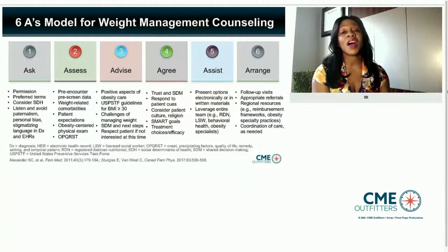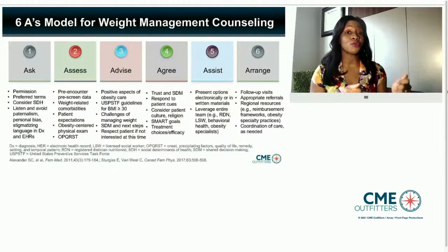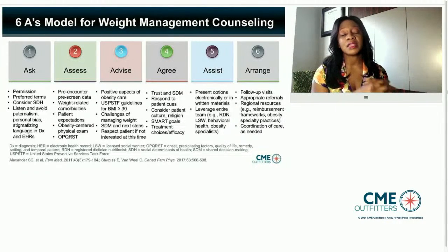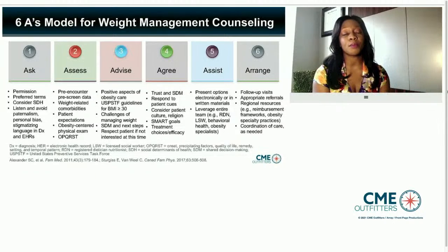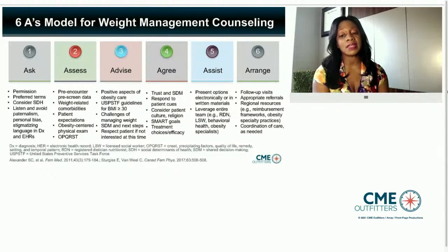Number five is to assist the patient — look at options both written and electronic that we can give patients to help them. We want to leverage the entire team, as multidisciplinary care of obesity is extremely important. And finally, we want to arrange — arrange for follow-up visits, appropriate referrals, regional resources that patients may need, and coordinate that care.